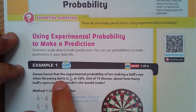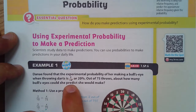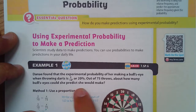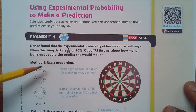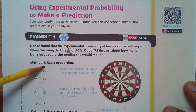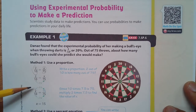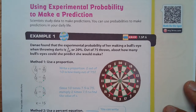Example 1. Danae found the experimental probability of her making a bullseye when throwing darts is 2 out of 10, or 20%. Out of 75 throws, how many bullseyes could she predict she would make? We'll use a proportion. We know that she does 2 out of 10, so how many times would she expect out of 75? You can see that 10 times 7.5 is 75, so you'd multiply 2 times 7.5, which is 15. She would expect it to happen 15 times.